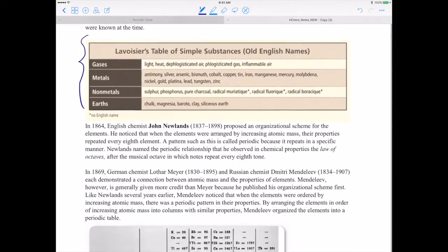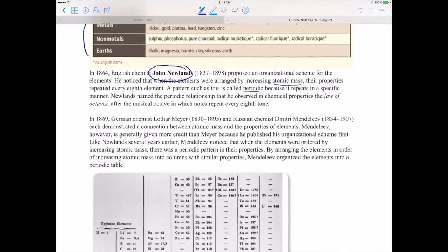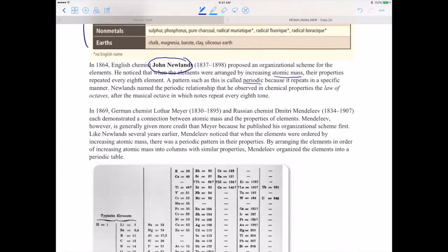In 1864, an English chemist John Newlands proposed an organizational scheme for the elements. He noticed that when the elements were arranged by increasing atomic mass—he used atomic mass, kiddos—their properties repeated every eighth element. Interesting. Their chemical and physical properties began to repeat every eighth element. A pattern such as this is called periodic because it repeats in a specific manner. Newlands named the periodic relationship that he observed in chemical properties the law of octaves, obviously because every eighth element the pattern repeated, also after the musical octave in which notes repeat every eighth tone.